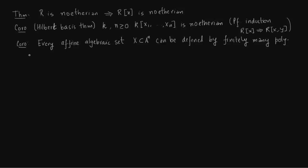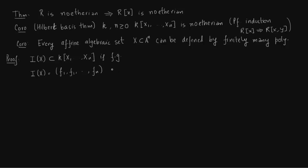This follows from the above corollary. The ideal I(X) in the polynomial ring k[x₁, ..., xₙ] — where k is not necessarily algebraically closed — is finitely generated, by the Hilbert Basis Theorem. This is because k[x₁, ..., xₙ] is Noetherian, and the Noetherian condition means every ideal of the ring is finitely generated. So you fix finitely many elements f₁, ..., fₙ which generate the ideal, where each fᵢ belongs to k[x₁, ..., xₙ].